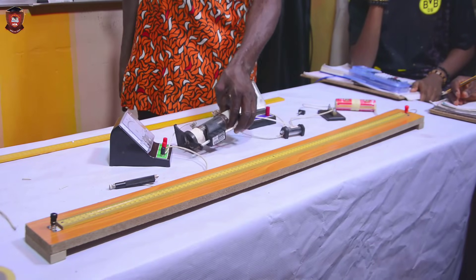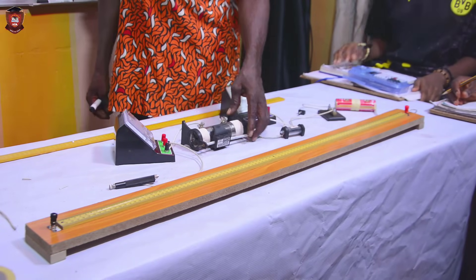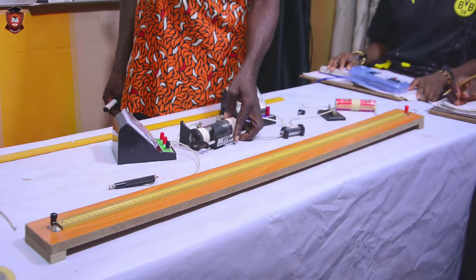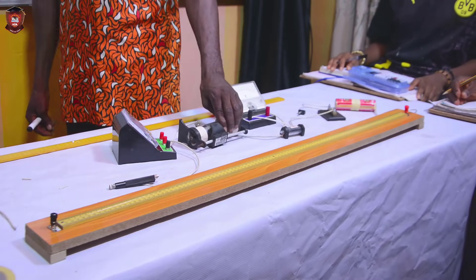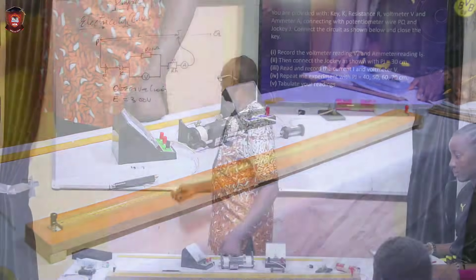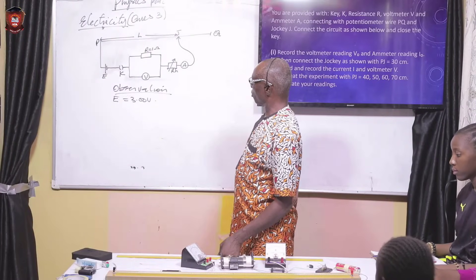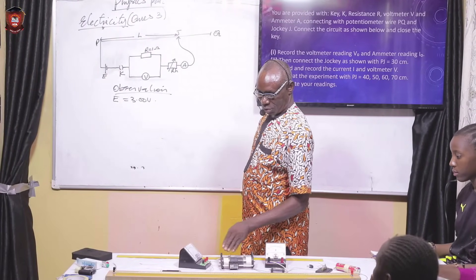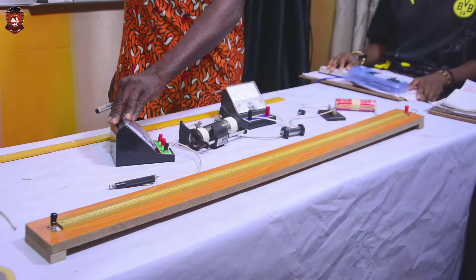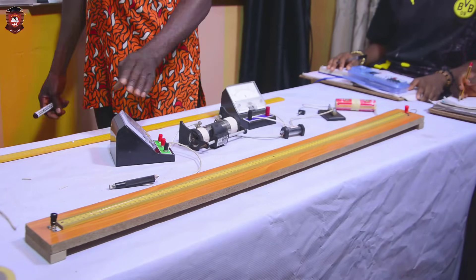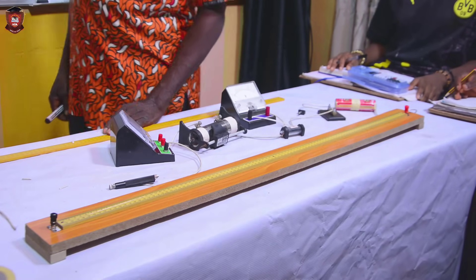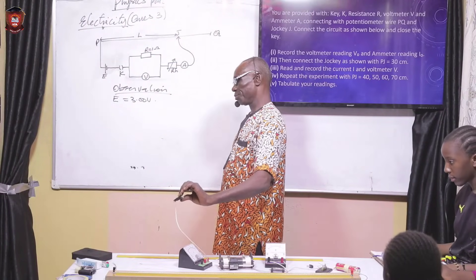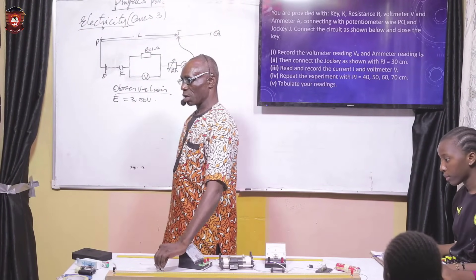From the parallel connection, we connect the rheostat. This is the rheostat — RH is the rheostat. From the rheostat, we now connect the ammeter. This is the ammeter, rated zero to 1.0 ampere. And from the ammeter to the jockey.